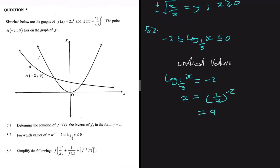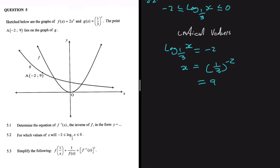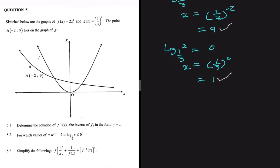That gives x equals 9. For our other critical value, we set log base (1/3) of x equals 0, so x equals (1/3) to the power 0. Any number to the power 0 is 1, so x equals 1. We now have two critical values: x equals 9 and x equals 1.